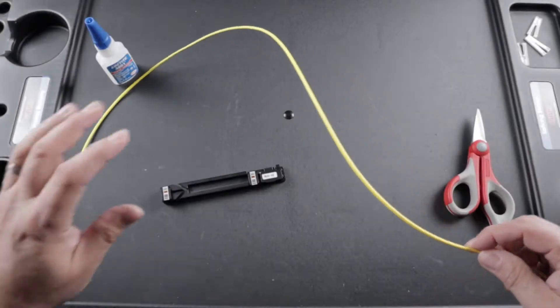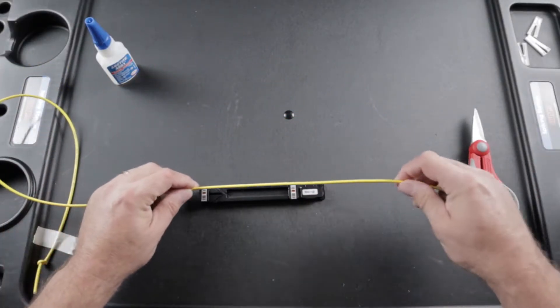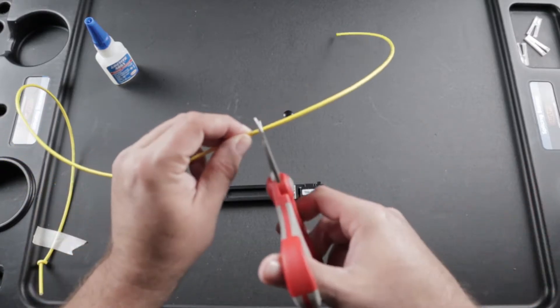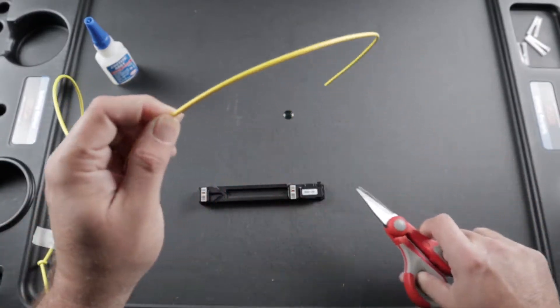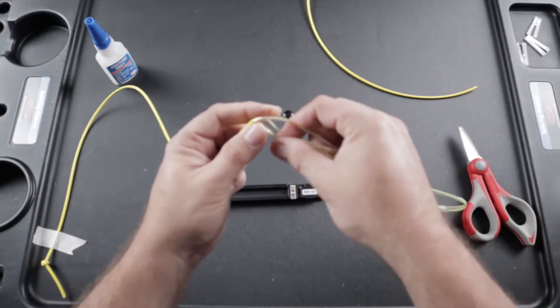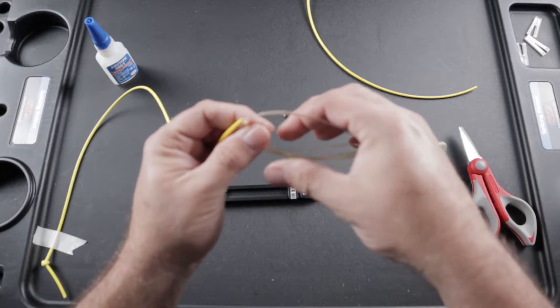First, strip your fiber about approximately 18 inches. Then, remove your Kevlar.